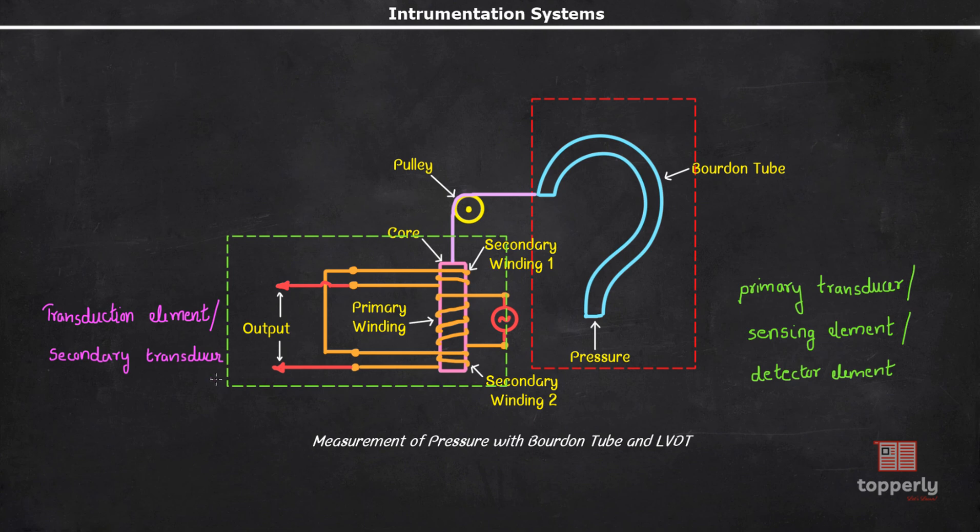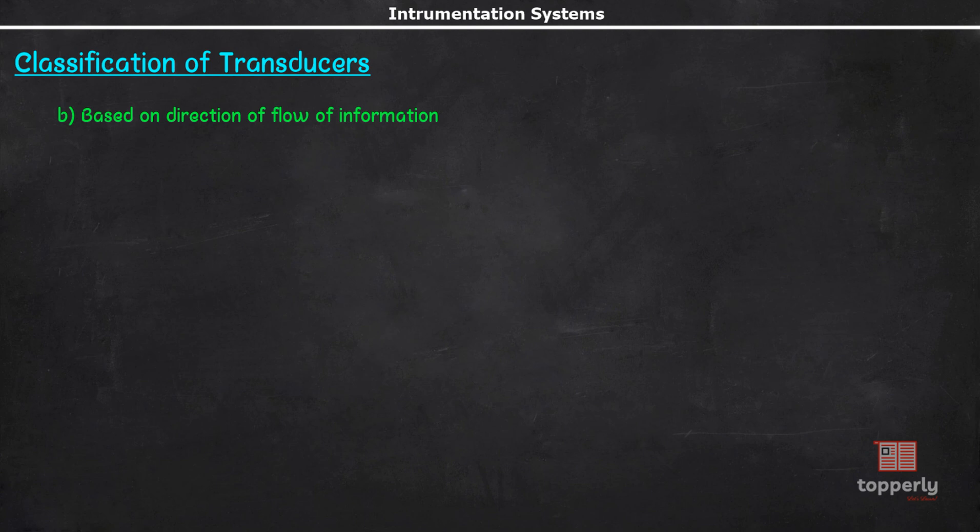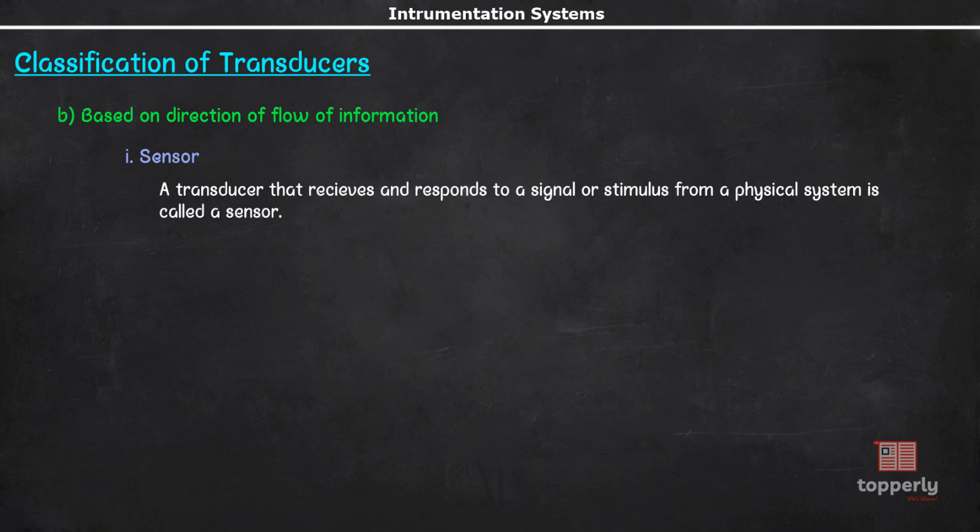Okay, moving on to the next type of classification, transducers can also be categorized based on the direction of flow of information. The first class is a sensor. A sensor is a transducer that receives and responds to a signal or a stimulus from a physical system. This sensor then produces a signal which represents the information about the system. An example of a sensor is a thermometer.